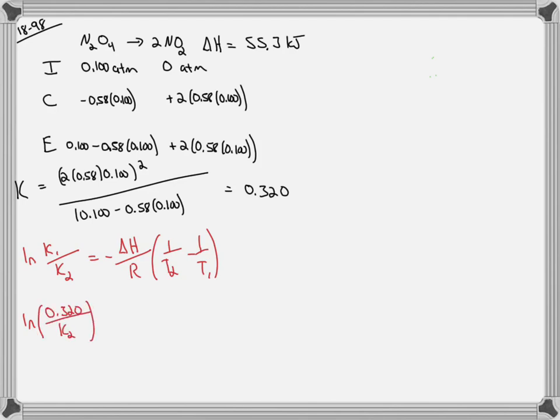So I'm going to take the natural log of the K value at 298 divided by the K value at 388 Kelvin, which we don't know. Set that equal to delta H of the reaction in joules, so it'll be the 55.3 kilojoules multiplied by a thousand gives 55,300 joules. Divide that by the R value which is 8.314 joules per Kelvin mole.